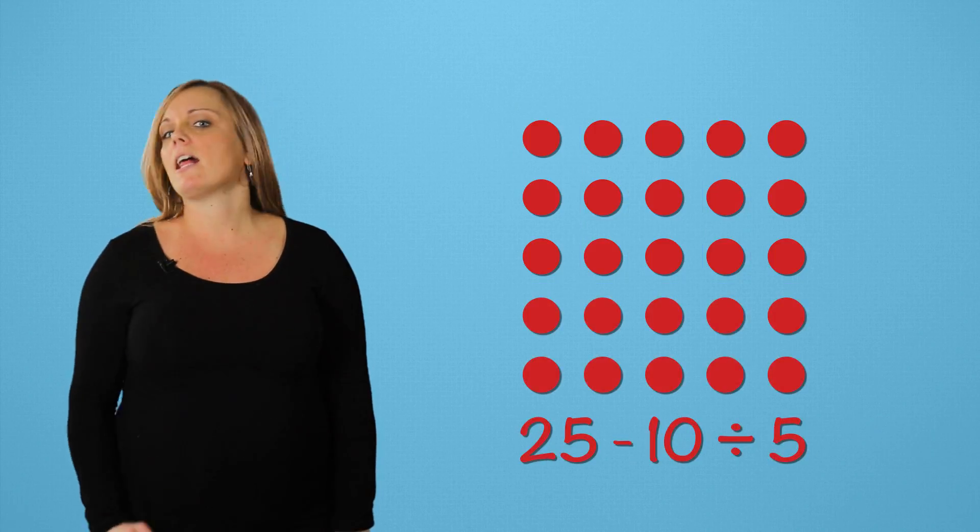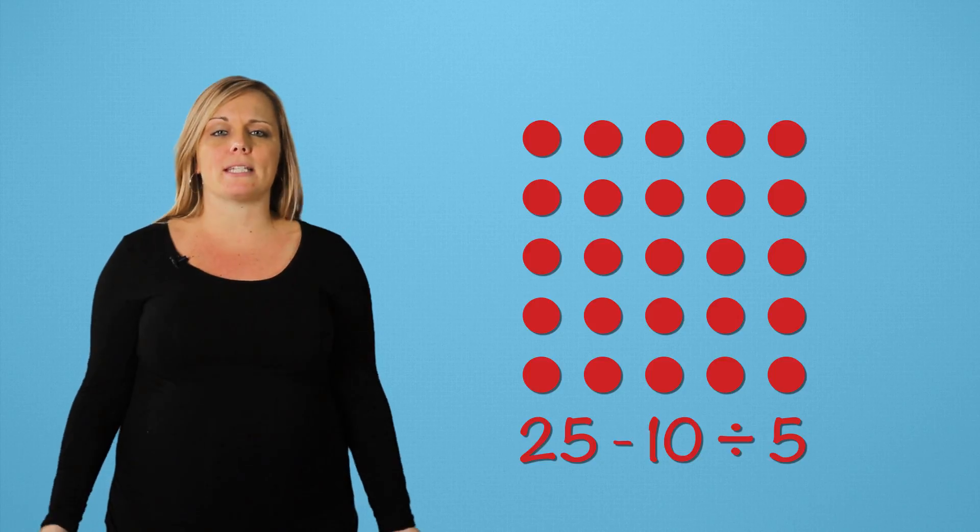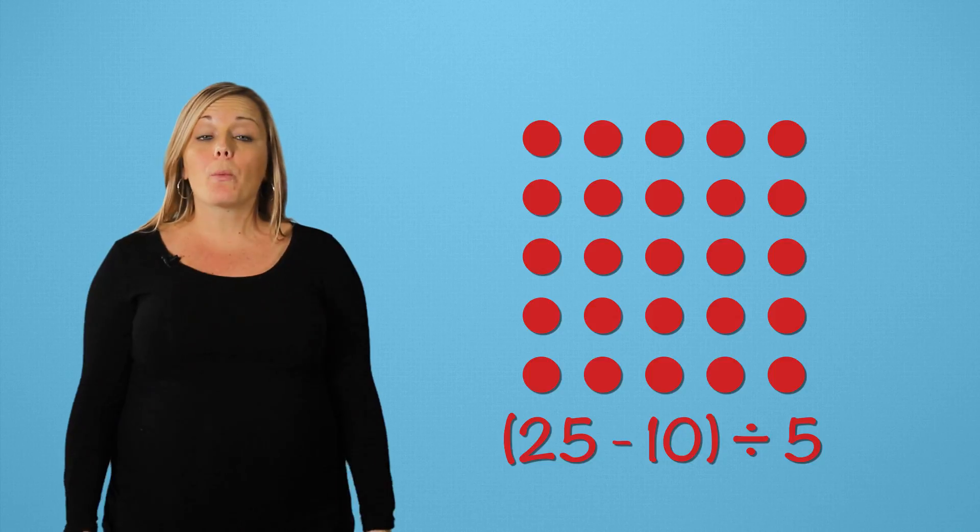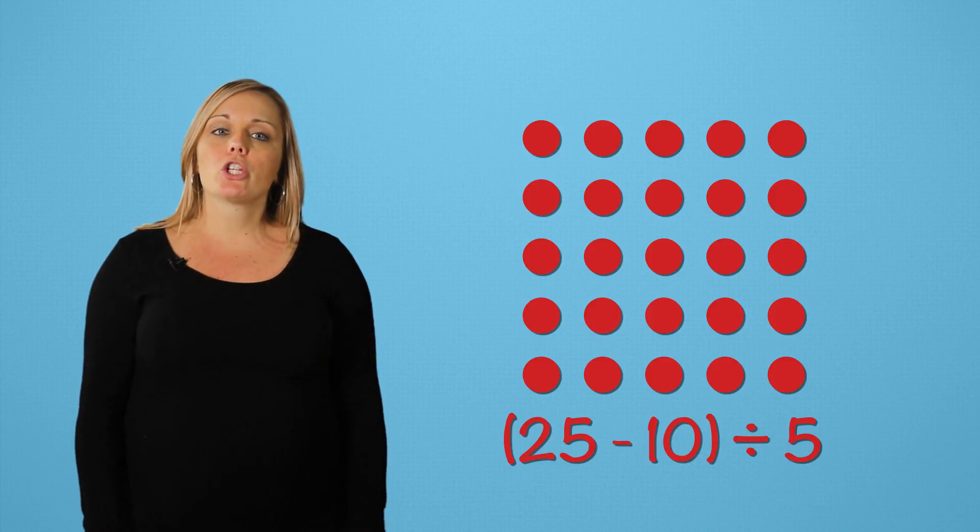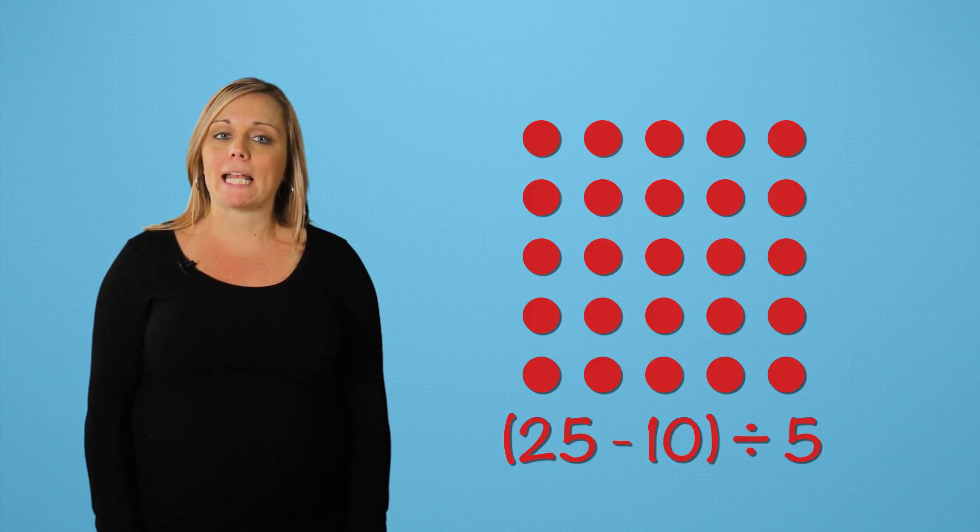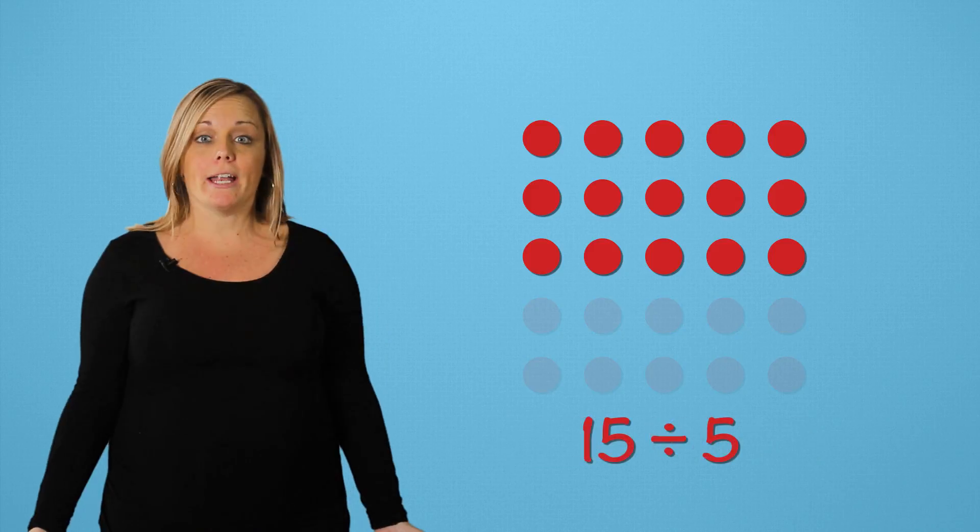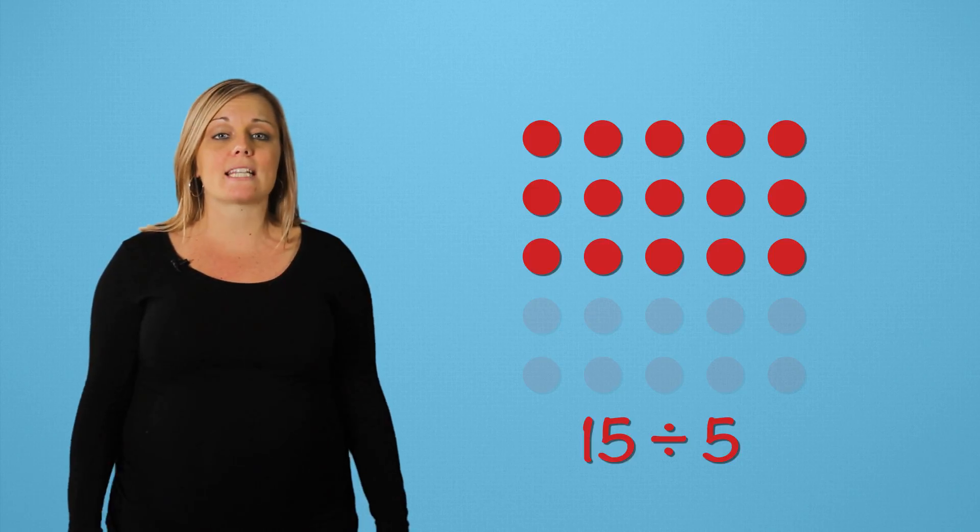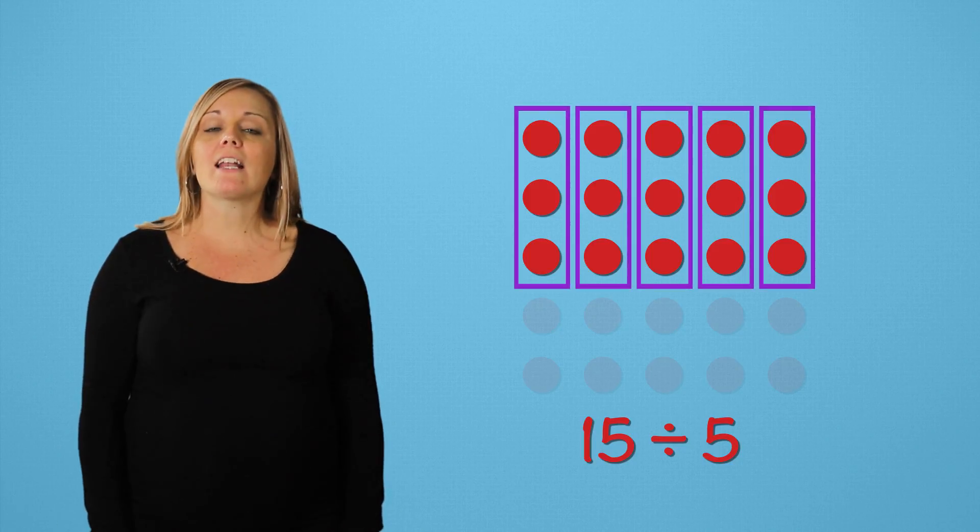Very good. Let's say we want to subtract first. Where would we put the parentheses? Exactly. And if we do that, what will our answer be? Well, we subtract first. So, that is 25 minus 10, which gets us... Good! And then we divide 15 by 5, which gets us... Very good. The final answer is 3.